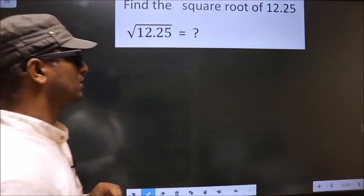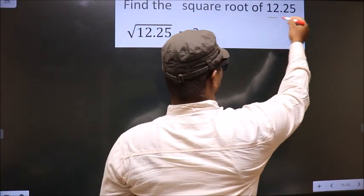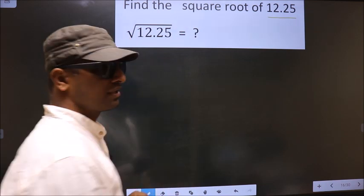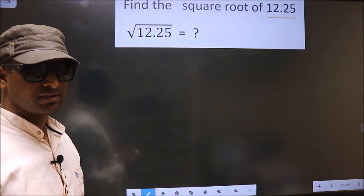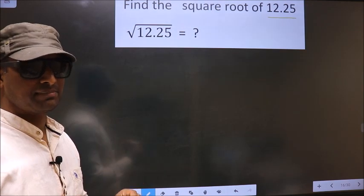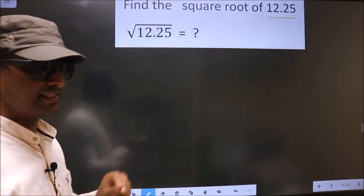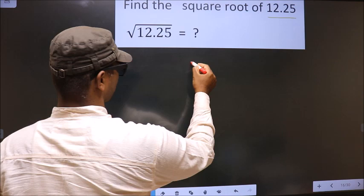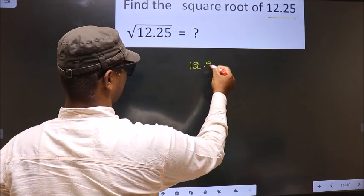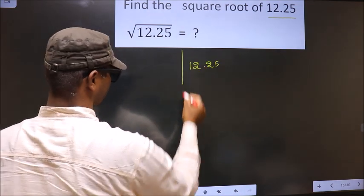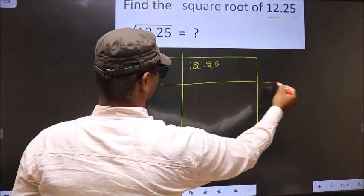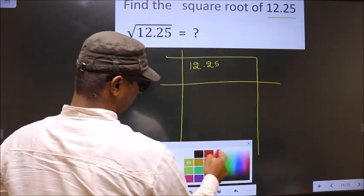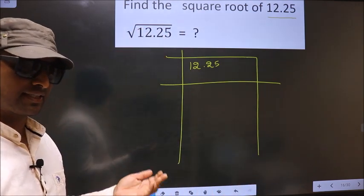Find the square root of 12.25. To find the square root by long division method, first we should frame it in this way. See, that is 12.25. Okay, next.